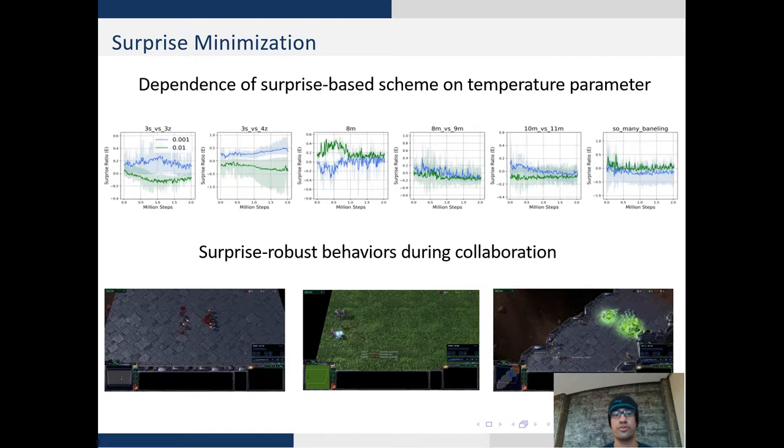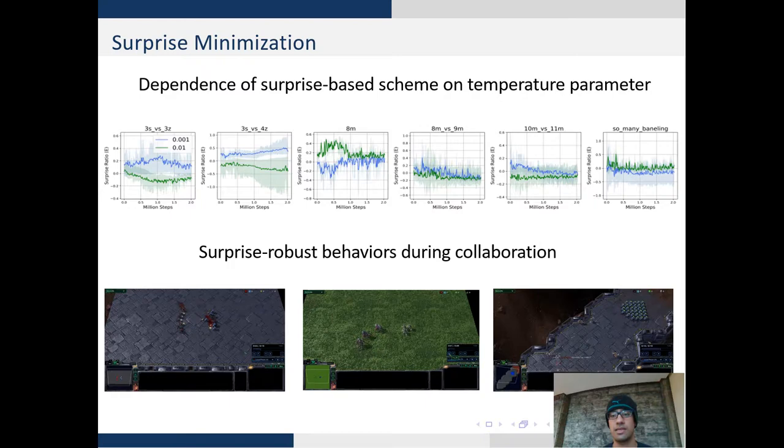We can further visualize these behaviors in agent form where we see in the first case the agents collaborate together and fire at the enemy in a definite formation. In the second case, agents take turns to fire while the other one recovers its health. In the last case agents have no choice but to sacrifice their lives to win the game.